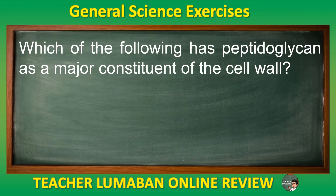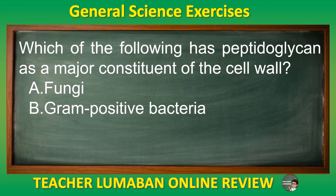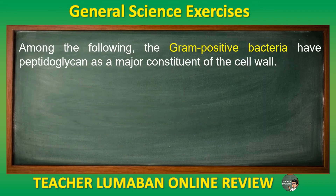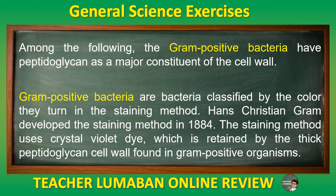Which of the following has peptidoglycan as a major constituent of the cell wall? Letter A: Fungi. Letter B: Gram-positive bacteria. Letter C: Gram-negative bacteria. Letter D: None of these. The correct answer is Letter B: Gram-positive bacteria. Gram-positive bacteria have peptidoglycan as a major constituent of the cell wall. Gram-positive bacteria are classified by the color they turn in the staining method developed by Hans Christian Gram in 1884. The method uses crystal violet dye, which is retained by the thick peptidoglycan cell wall found in gram-positive organisms.